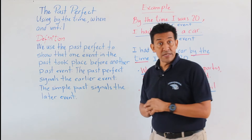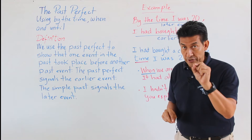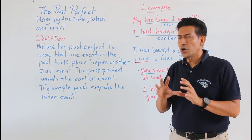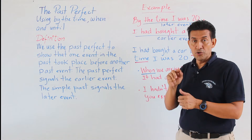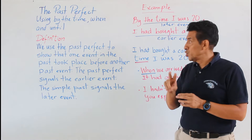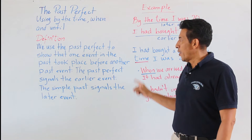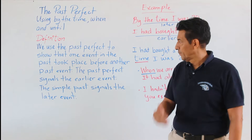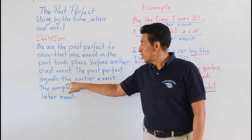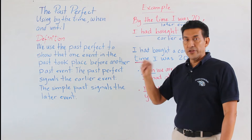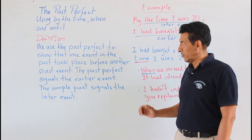Let's read the definition. We use the past perfect to show that one event in the past took place before another past event. The past perfect signals the earlier event. The simple past signals the later event.